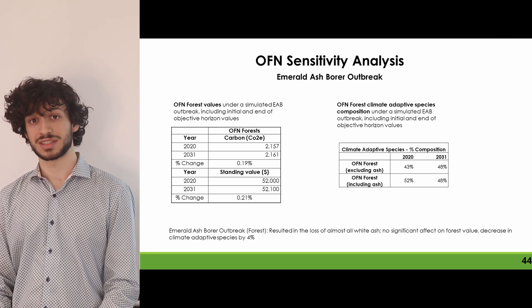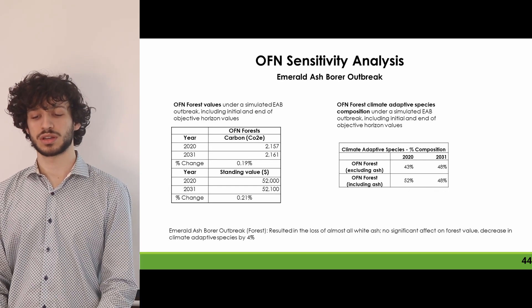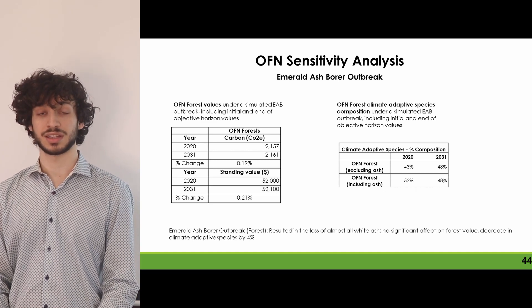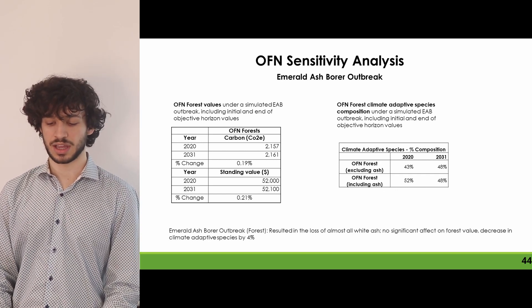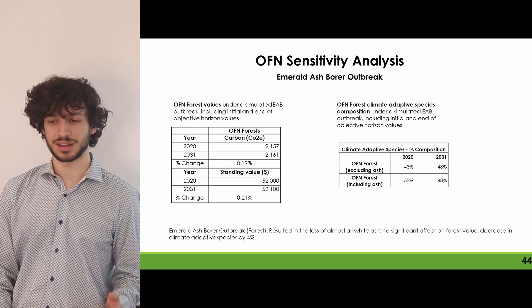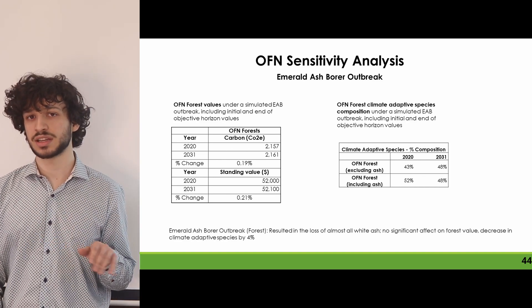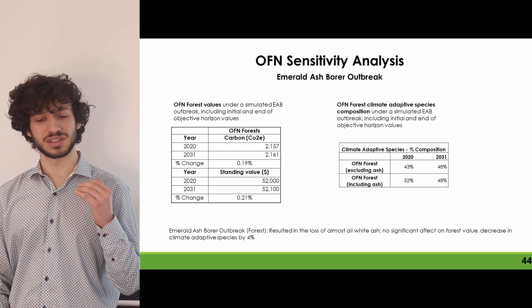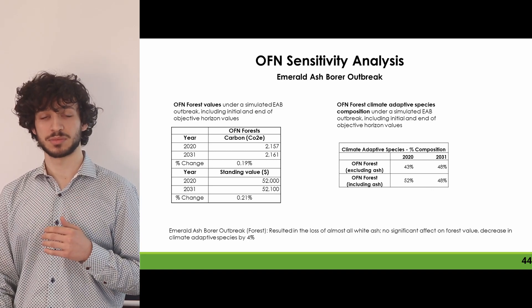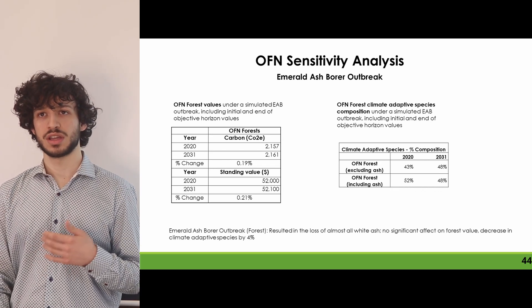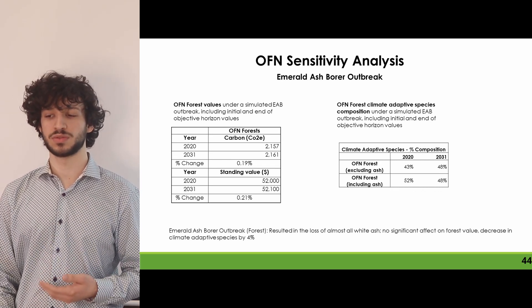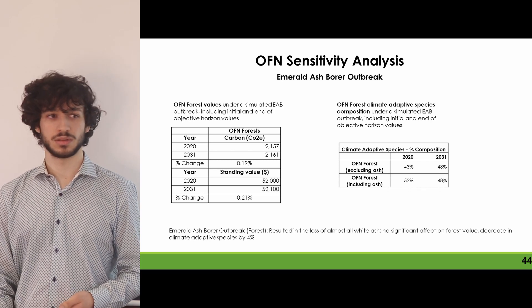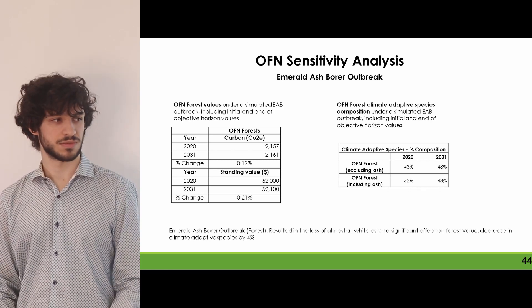For the orphan forest sensitivity analysis, an emerald ash borer outbreak was simulated where 25% of trees face mortality in the first five years and 99% by year 10. Carbon storage and standing value level out over the 10-year period as ash trees decline while the rest of the forest increases. Climate-adaptive species composition increases when ash is excluded, but decreases when ash is included, since ash is forecasted to do well under climate change projections. However, emerald ash borer effectively halts that forecast.